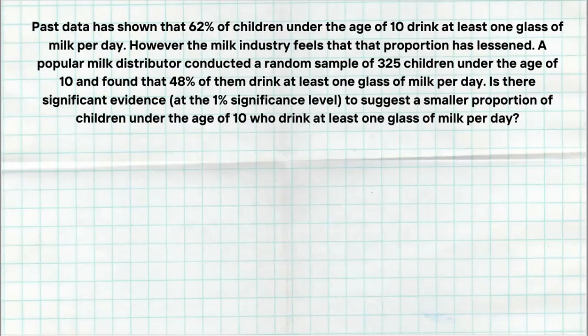All right, so here's the problem. Past data has shown that 62% of children under the age of 10 drink at least one glass of milk per day. However, the milk industry feels that the proportion has lessened. A popular milk distributor conducted a random sample of 325 children under the age of 10 and found that 48% of them drink at least one glass of milk per day. Is there significant evidence at the 1% level to suggest a smaller proportion of children under the age of 10 who drink at least one glass of milk per day?